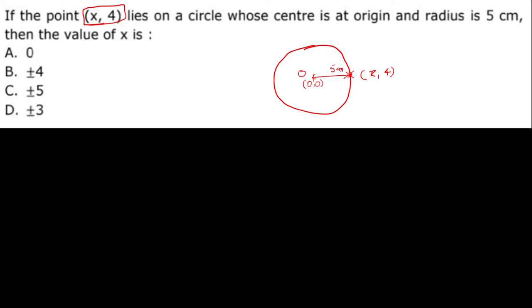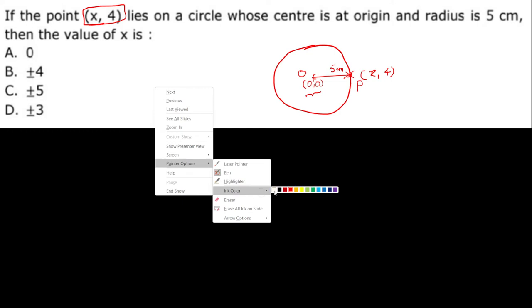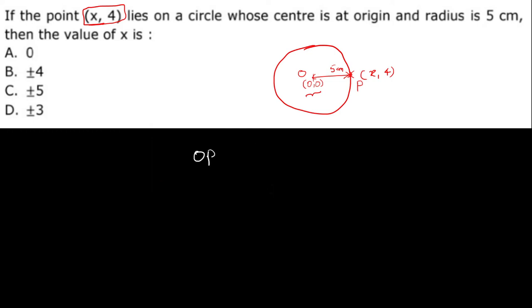Point O and point P, OP is 5. The center is at 0 comma 0 and point P is x comma 4. Therefore OP equals 5.